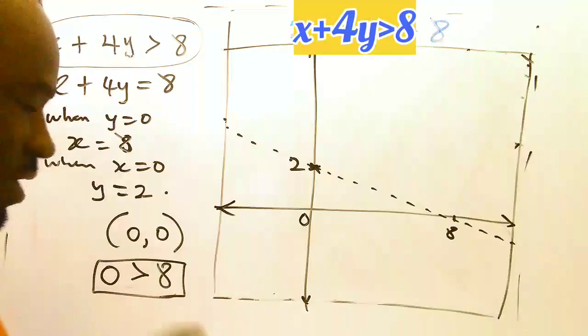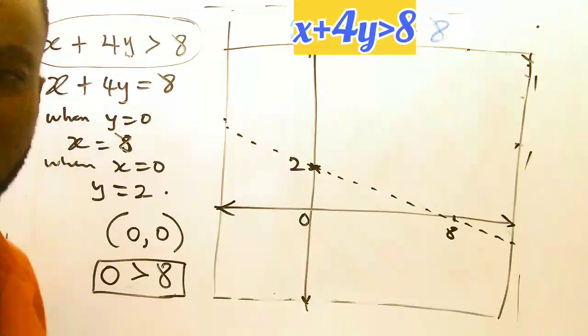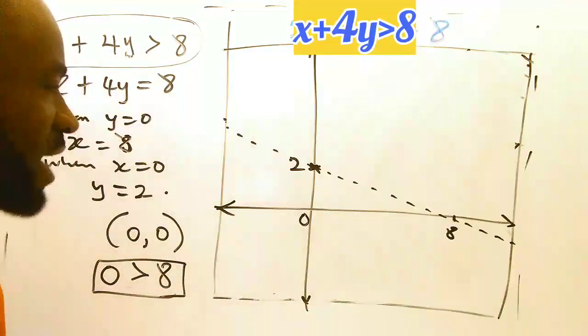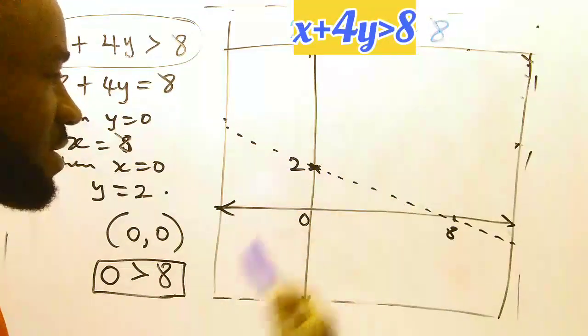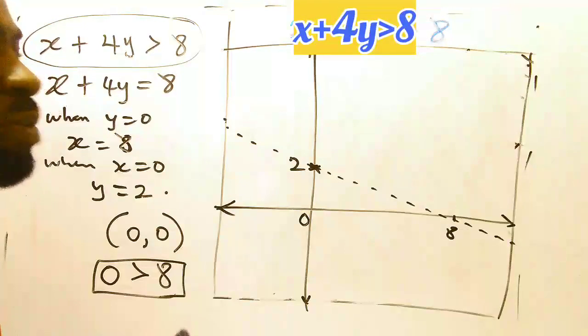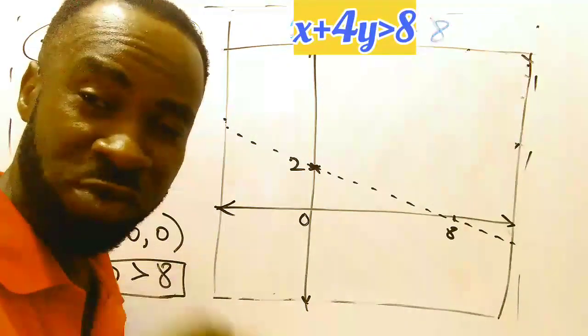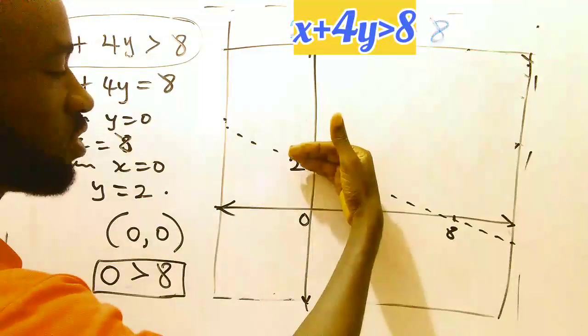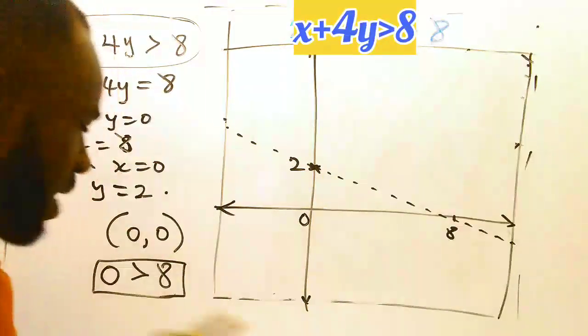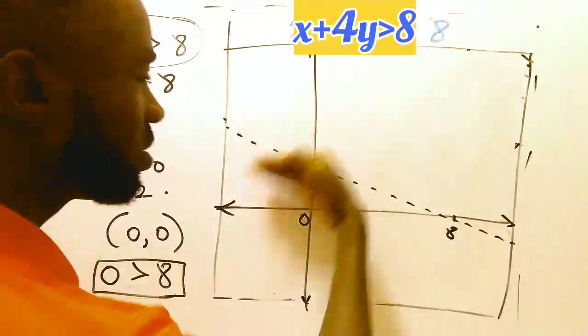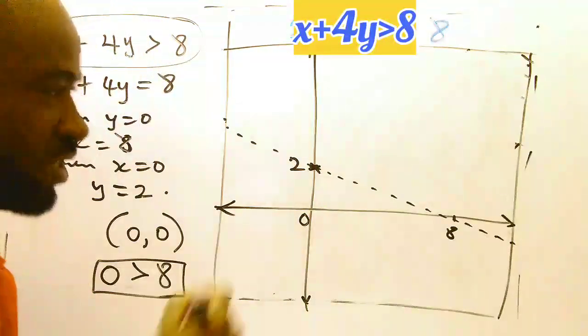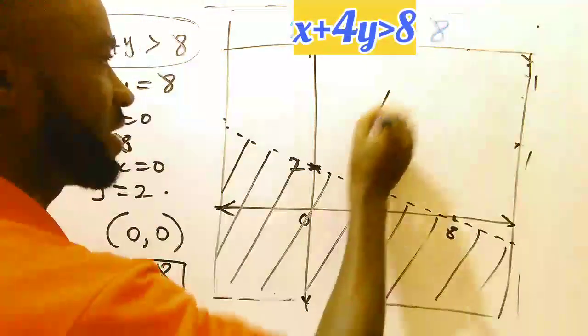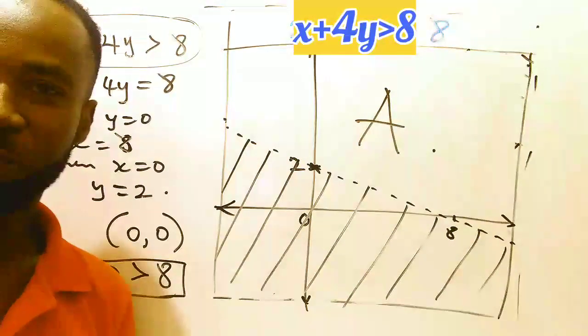Now, you ask yourself, is 0 actually greater than 8? No. So this is not valid. Anytime it is not valid, it means that the points or the areas that contain this origin will be rejected. This is the opposite of what we did in our first example. Since it is not valid, any region towards this origin will be rejected. So we are going to shade this region to show that it's being rejected, and then this other part is the acceptable region. And so this is how to plot the graph.